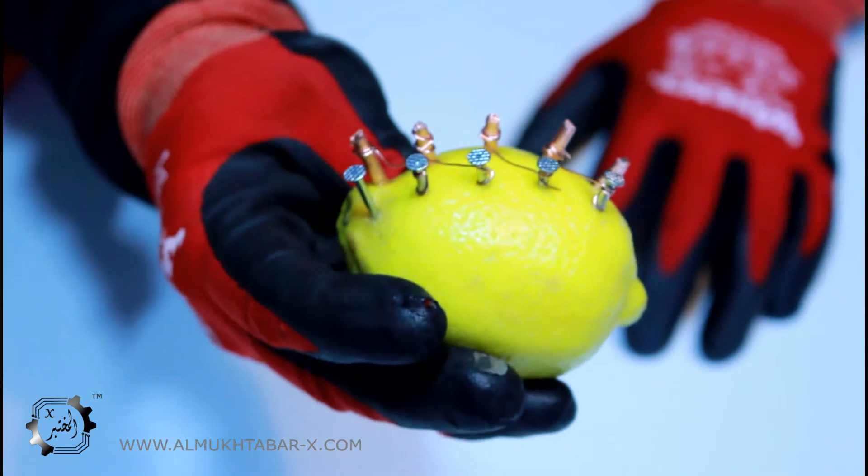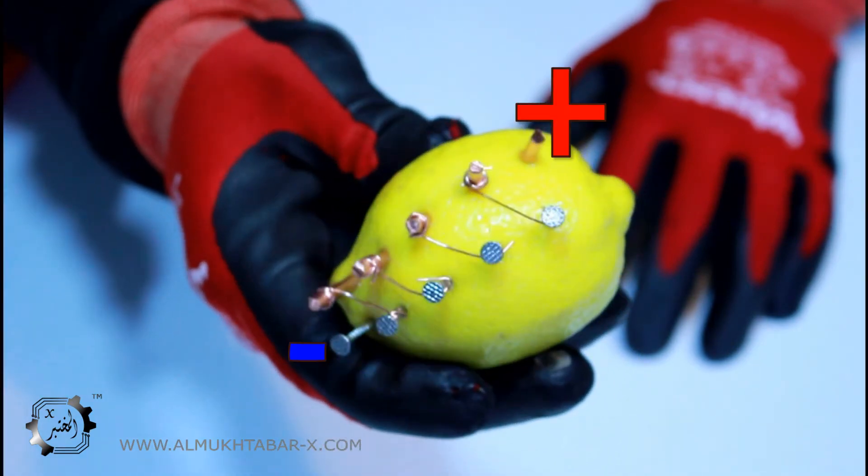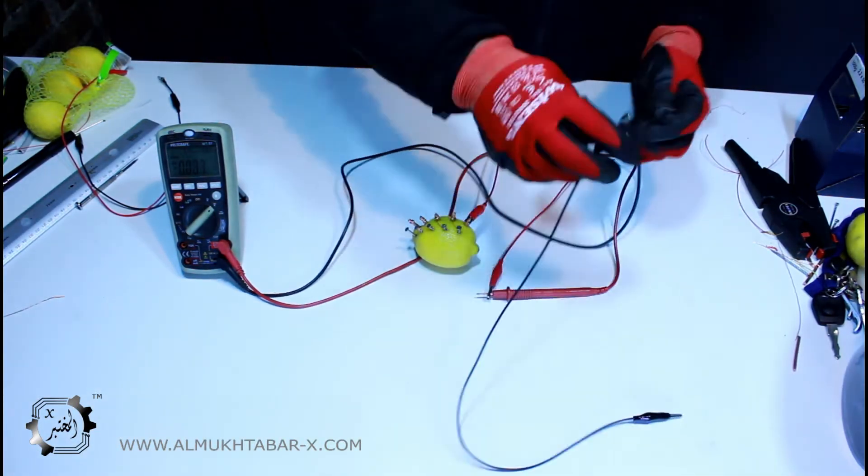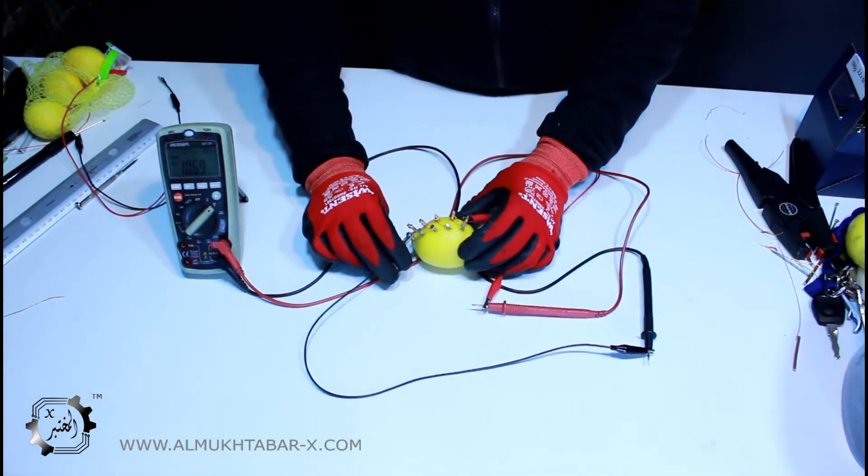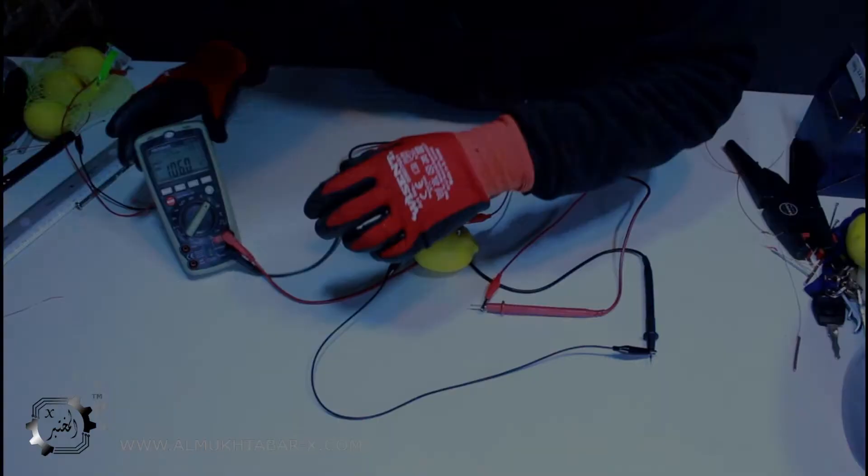The final product would look like this. So now connect the positive pin of your multimeter to the positive pin of the lemon and negative to the negative. Well, unfortunately it doesn't work.